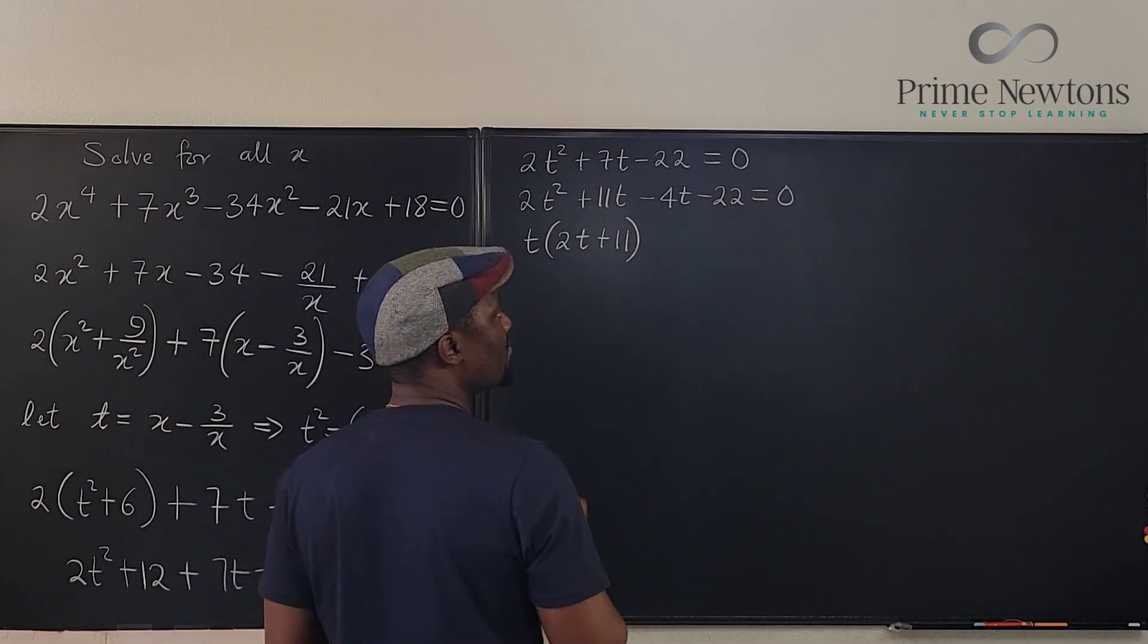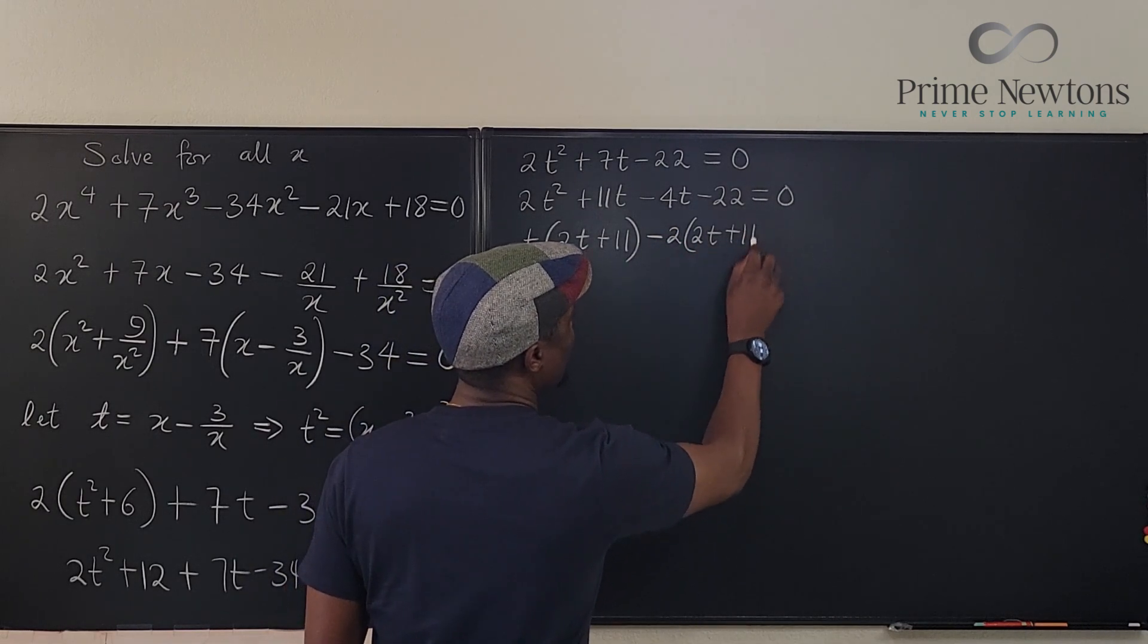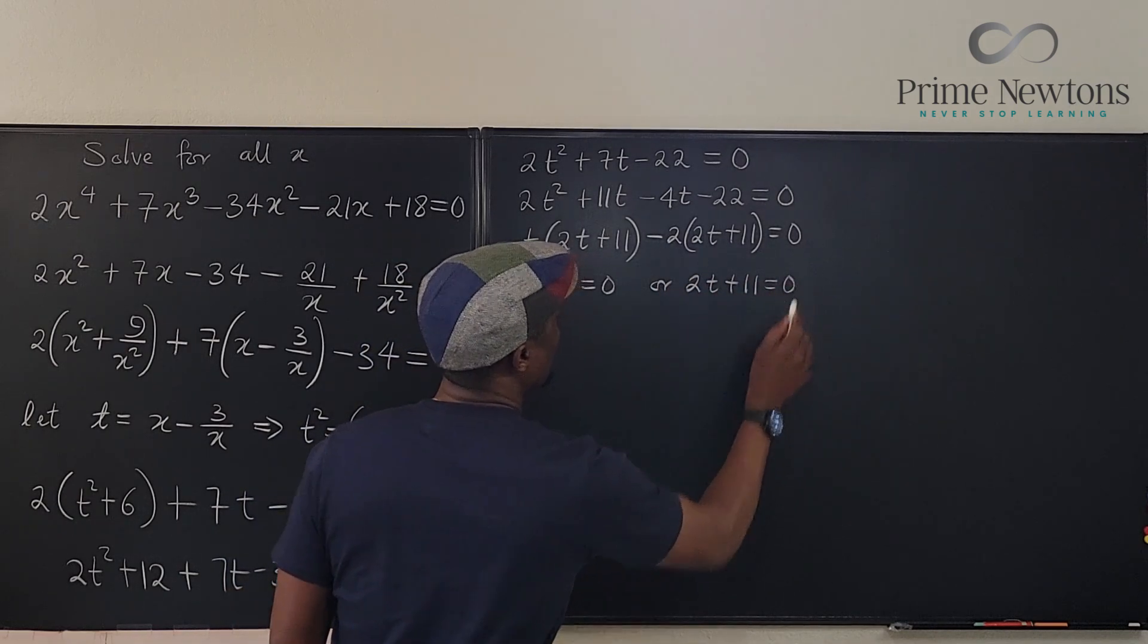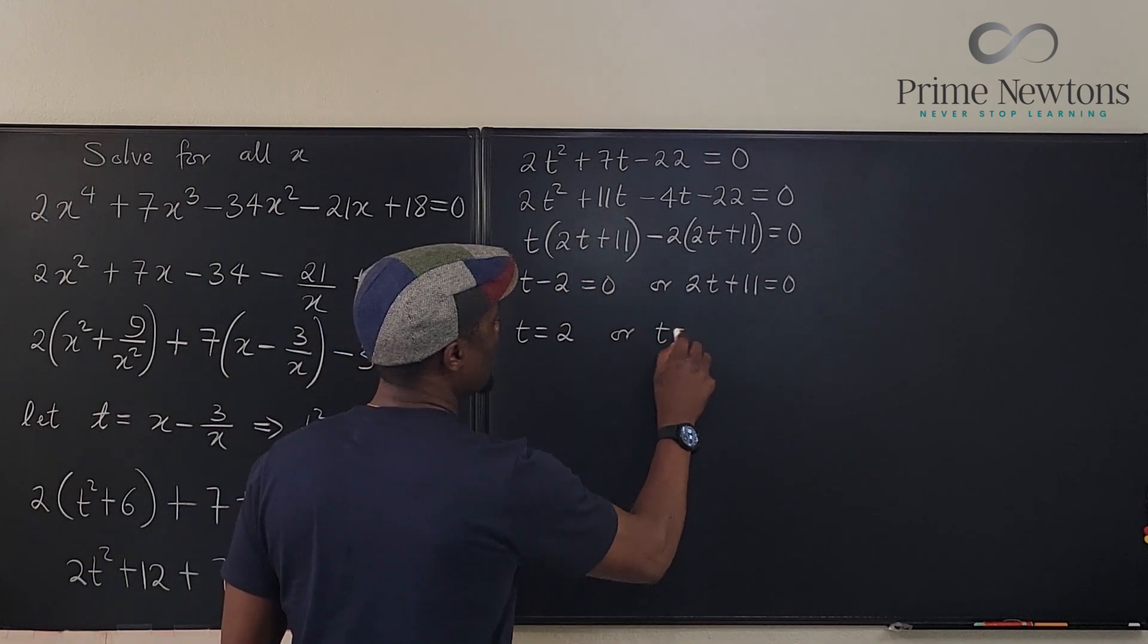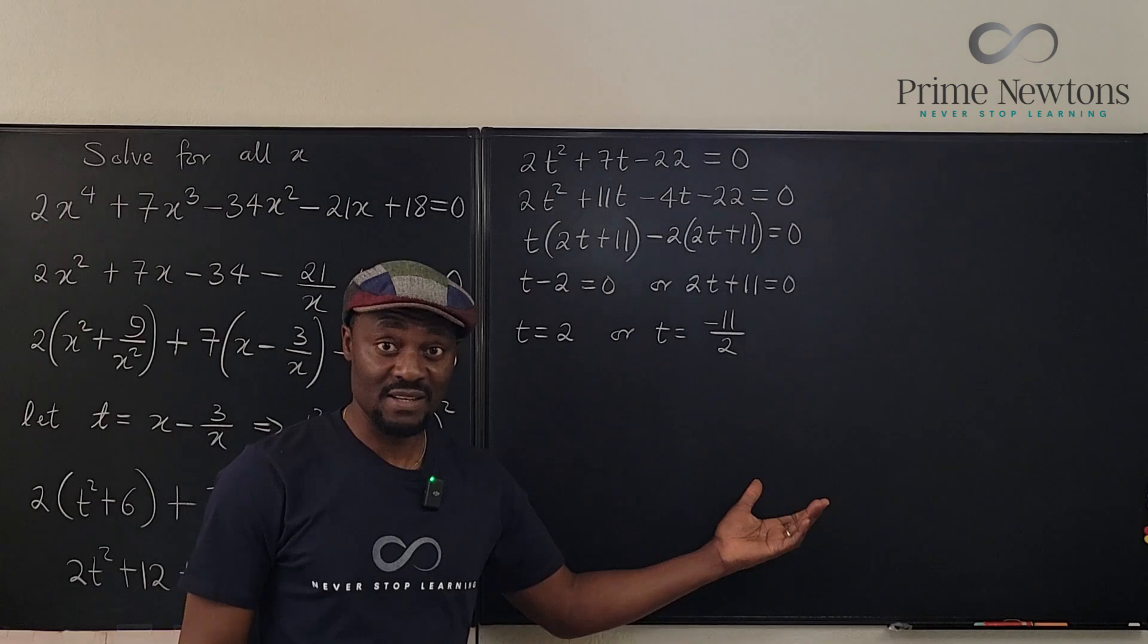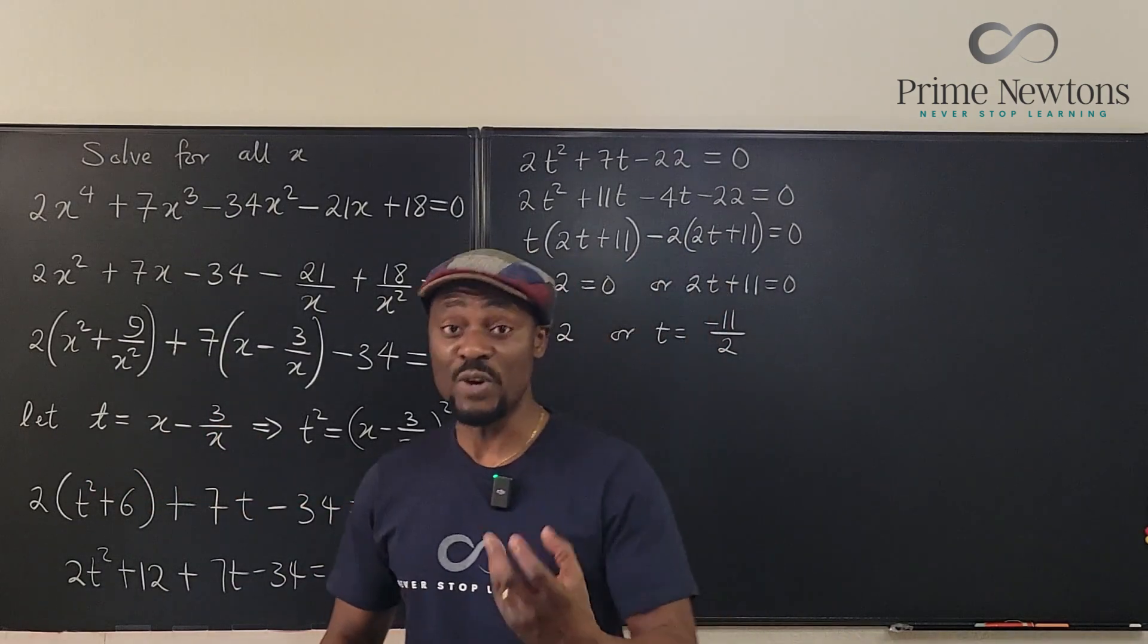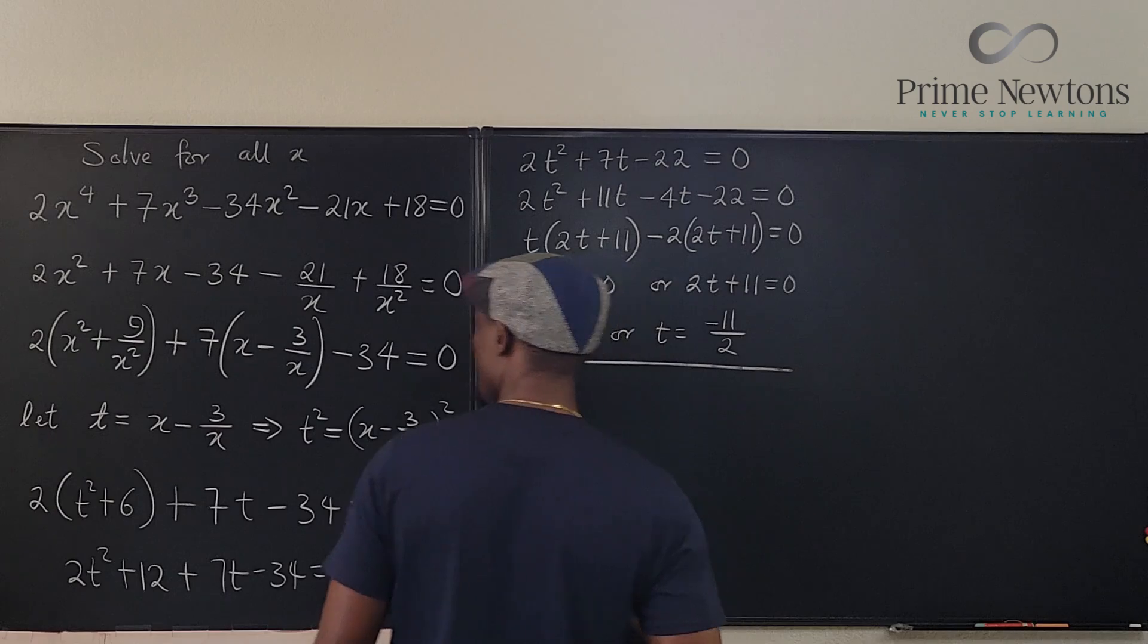What's left is just 2t plus 11. Here, what's common is just negative 2, and we'll have 2t plus 11 equals zero. So we have t minus 2 equals 0 or 2t plus 11 equals 0. So here we have t equals 2, or t equals negative 11 over 2. Okay, so these are the two possible values of t. You don't have any doubts when it comes to this. So you want to go back to the substitution that we did. We know that t is x minus 3 over x, and then we now need to get x. So this is not the end. We need to get x.